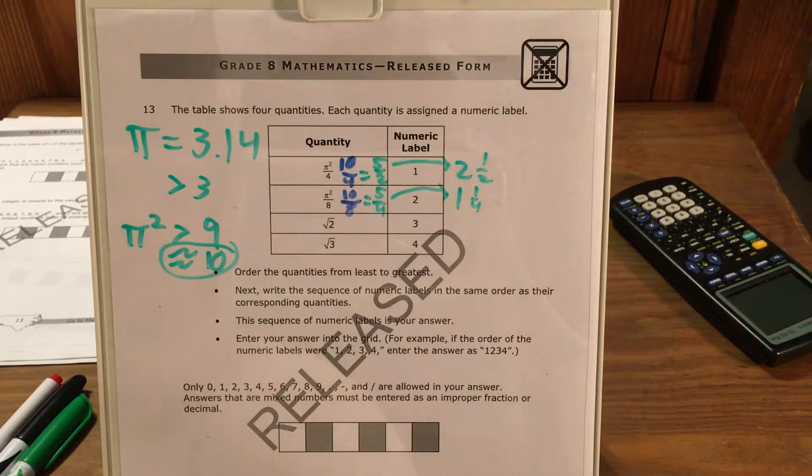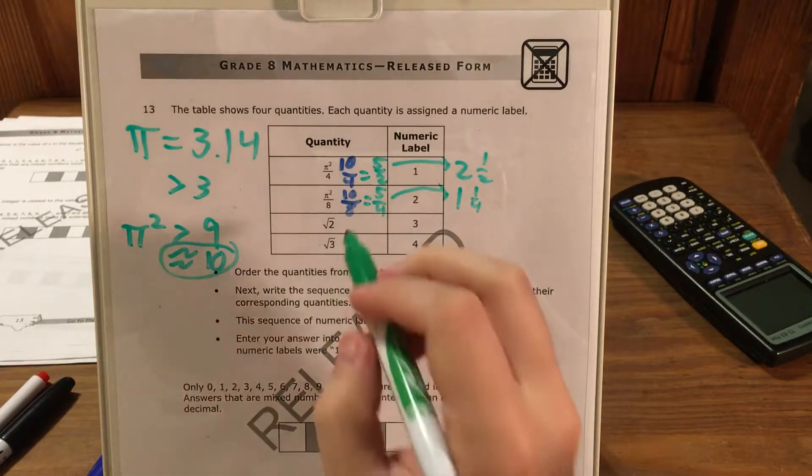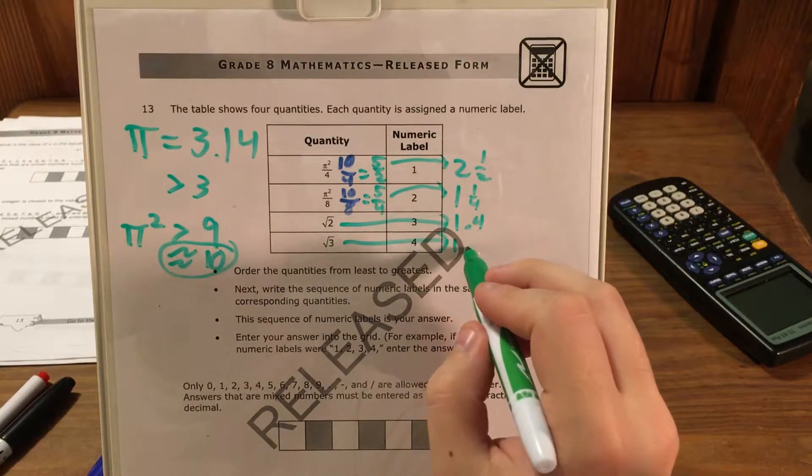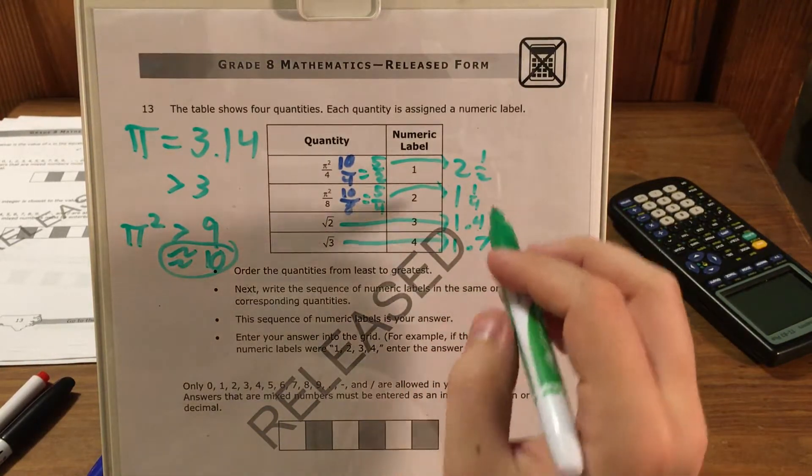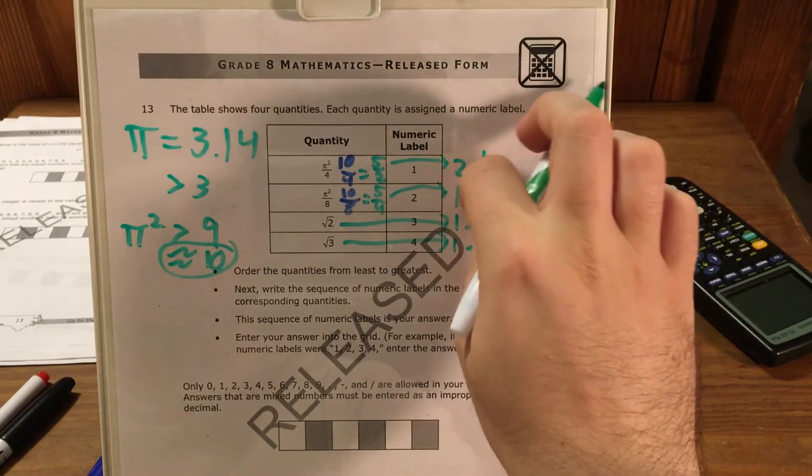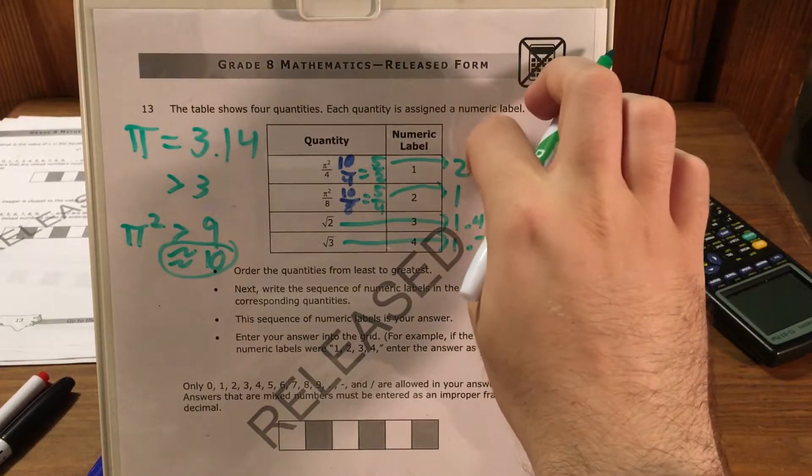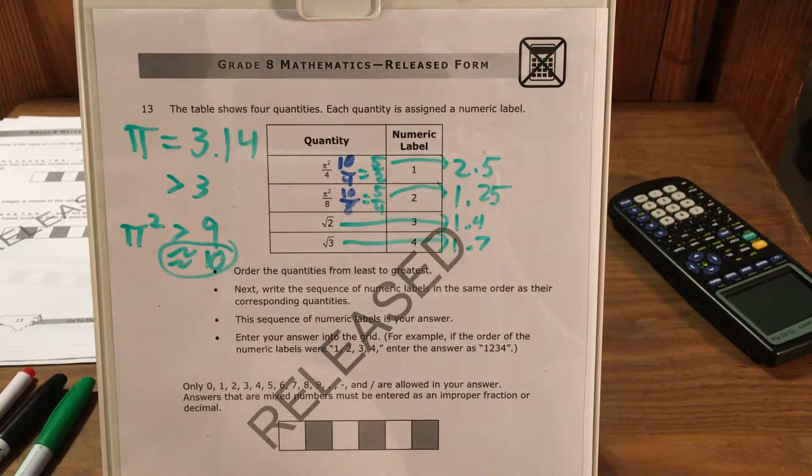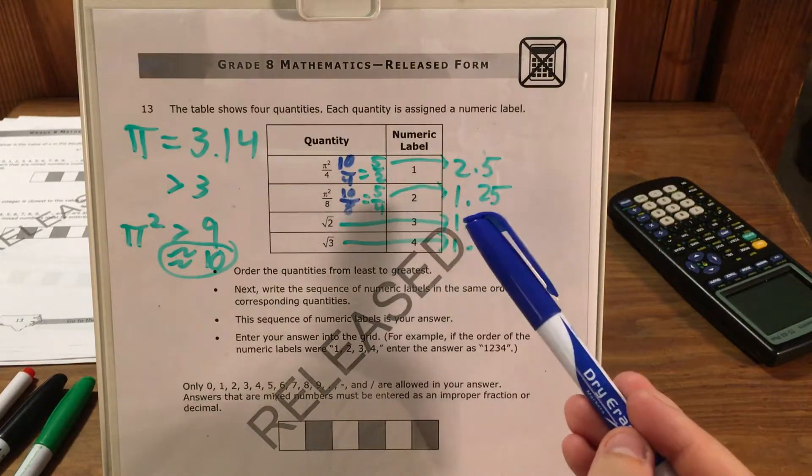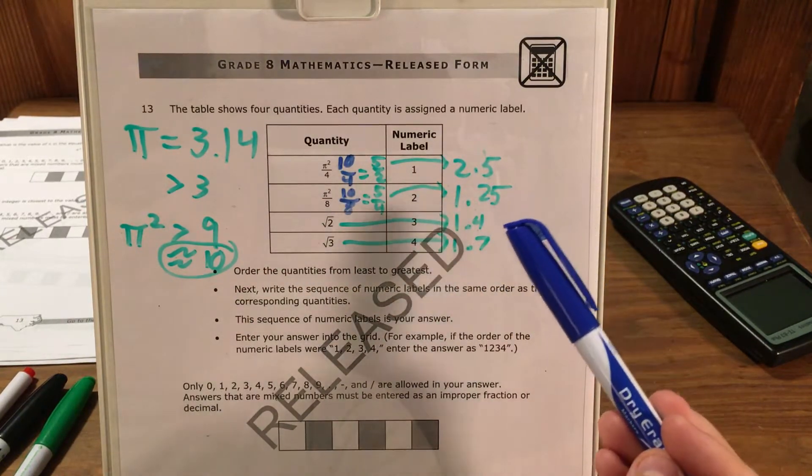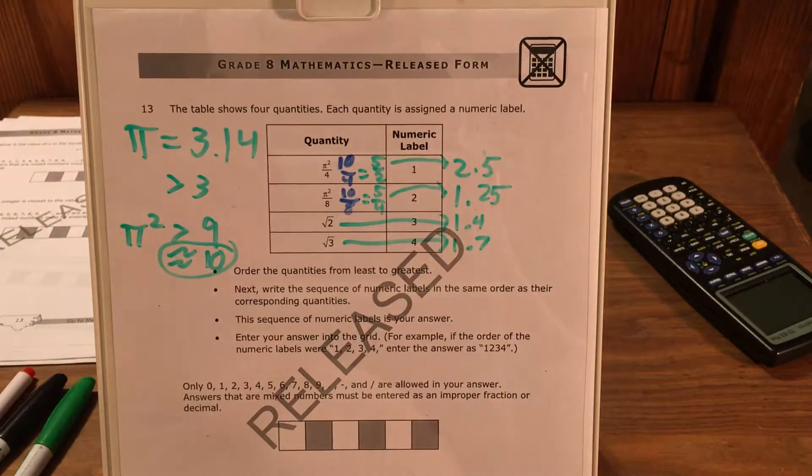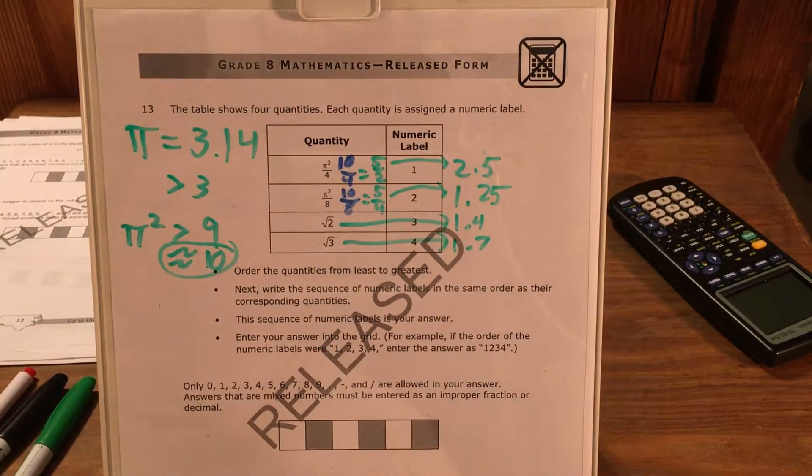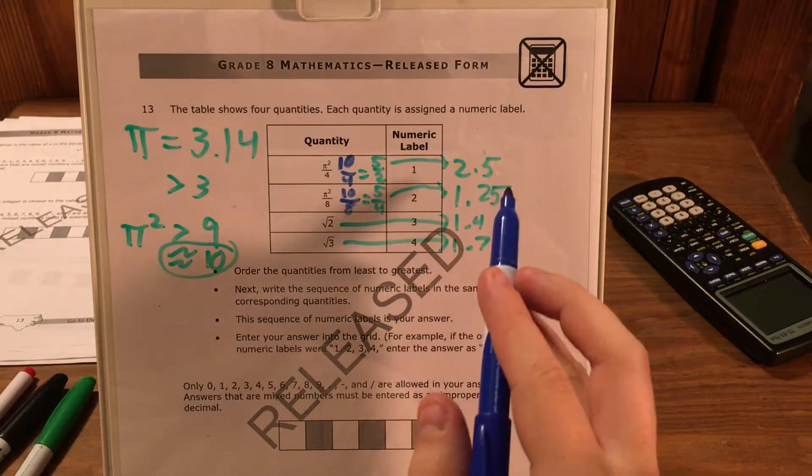The square root of 2 we already said was going to be about 1 and 4 tenths. The square root of 3 we already said was going to be about 1 and 7 tenths. And 1 and 1 fourth and 2 and a half, I'm going to change to their decimal forms, which is 1 and 25 hundredths and then 2 and 5 tenths. So now that we have all of these weird irrational numbers as estimations that are decimals, and these are very close to what they actually are, we estimated well. Using that trick that pi squared equals 10 and using the trick of looking at the tenths in our list of square numbers helped us. Now I can go ahead and order these from least to greatest.